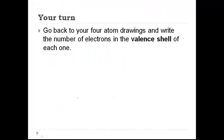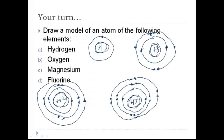So I want you to go back to your four atom drawings that you did before. These guys right here and I want you to count up how many valence electrons there are on each of these four. So hit pause and then we'll get back together and go over the answers.